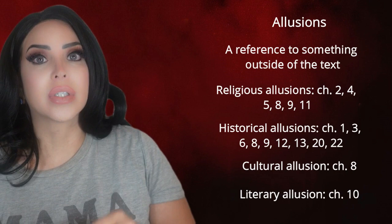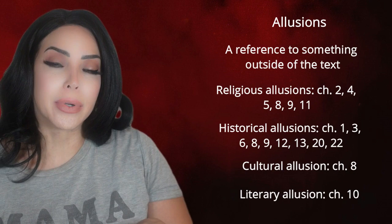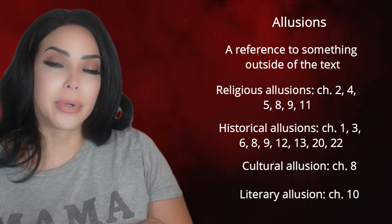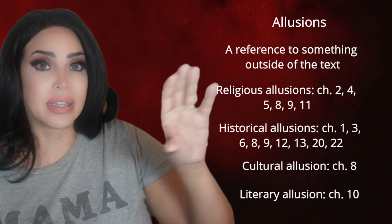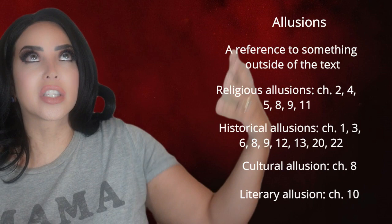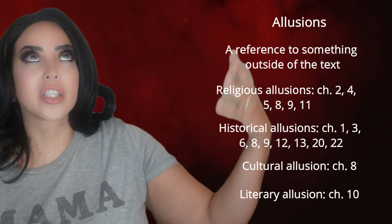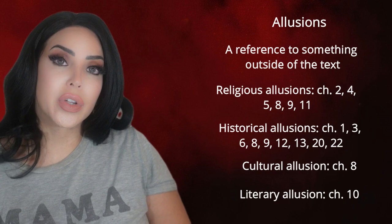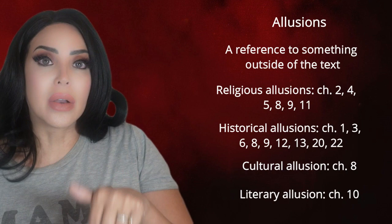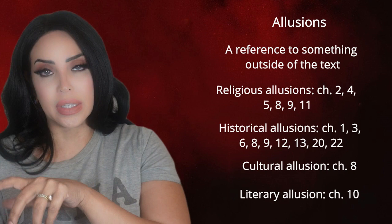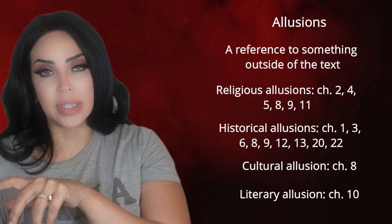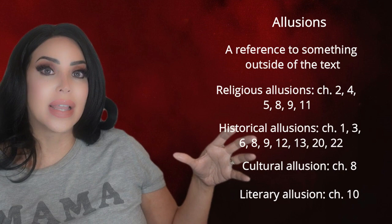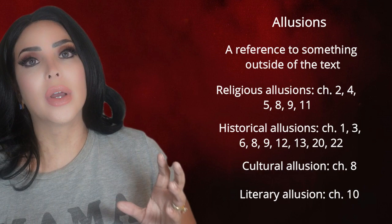Chapter ten has a literary allusion to Pilgrim's Progress by John Bunyan — an allegory featuring different entrances to hell on earth. Chapter eleven references the Pentecost, a religious event where people experience the spirit of God. Chapter twelve alludes to Governor Winthrop, who in real life founded the Puritan colony at Salem. In the book, he has just died, representing the old guard — the old way of doing things — now dead and gone, signaling that things are going to change.